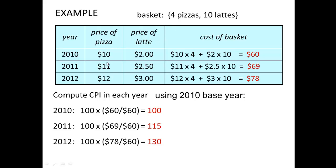We do the same for 2011. The price of a pizza is now eleven dollars and the price of a latte is fifty cents. Going through the same calculations, the basket cost rose to sixty-nine dollars. Then in 2012, the price of pizza went up to twelve dollars and the price of the latte went up to three dollars, and our basket went from sixty-nine to seventy-eight dollars.